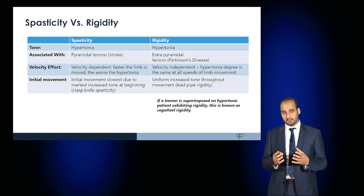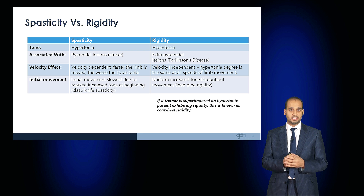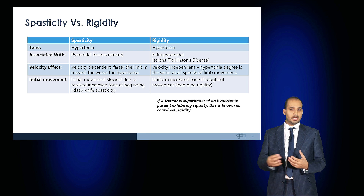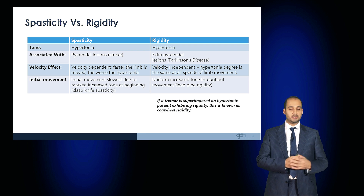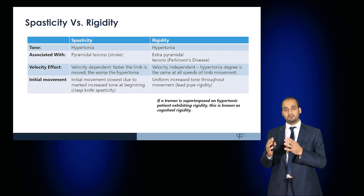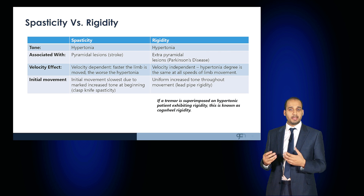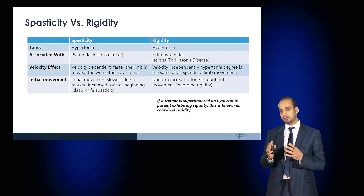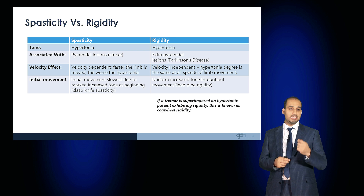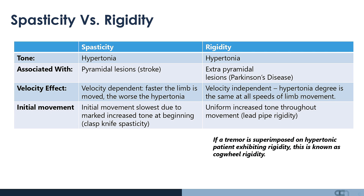Determine if the tone is hypertonic — whether the patient exhibits spasticity or rigidity. Spasticity is velocity dependent: the faster the limb is moved, the more marked the hypertonia. Rigidity is velocity independent; irrespective of the speed, the degree of hypertonia remains the same throughout. In spasticity, the initial movement shows the most marked increase in tone, described as clasp knife spasticity. In rigidity there is uniform increase of tone throughout movement, known as lead pipe rigidity. If there is a superimposed tremor, this is known as cogwheel rigidity.